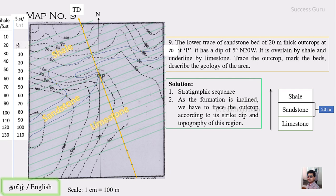The zone between the two traces is your sandstone bed with 20 meters thickness. Above it is shale, which is the youngest sequence, and below it is limestone, which is the older sequence. If you have any doubts, mention them in the comment section and I will address them in upcoming videos. Thank you.